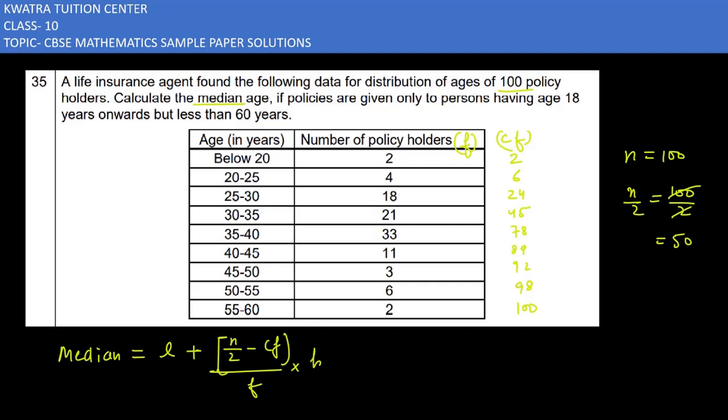It would be 35 and 40. Because what is the median class after 50? It is 78. The median class is 35 to 40. The lower limit is 35. The frequency is 33.